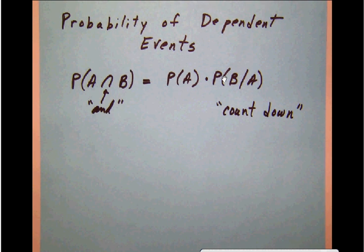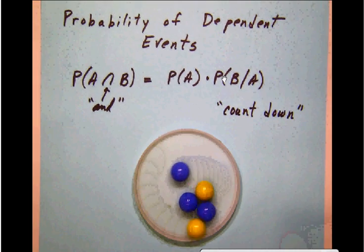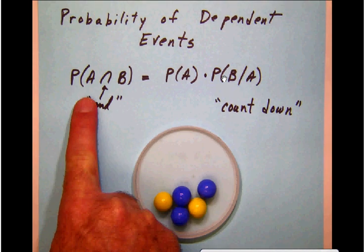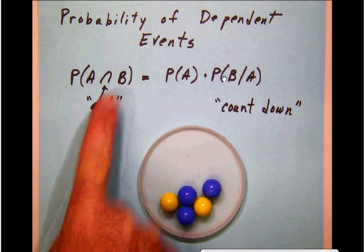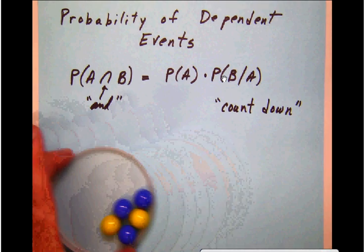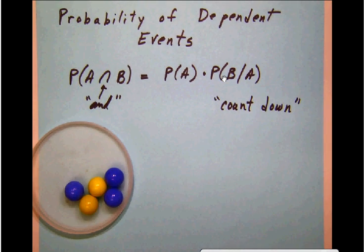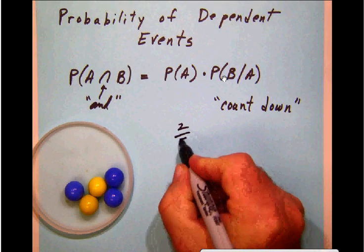As we go back and take a look at our marble example, remember if we want to get the chance of two yellow marbles—in other words, the probability that the first marble is yellow and the second one is yellow—that's going to give us a probability of two out of five for the first marble.